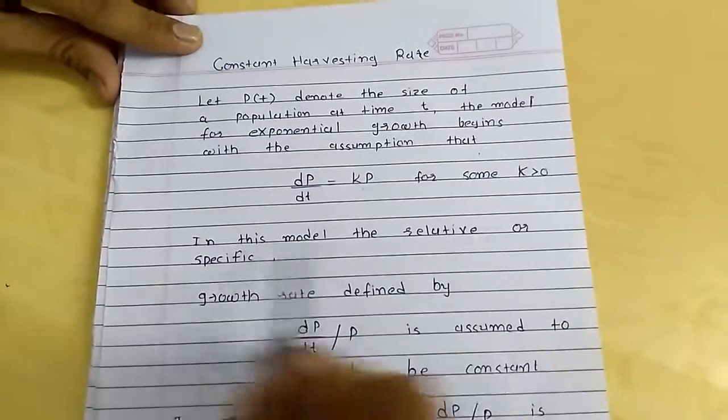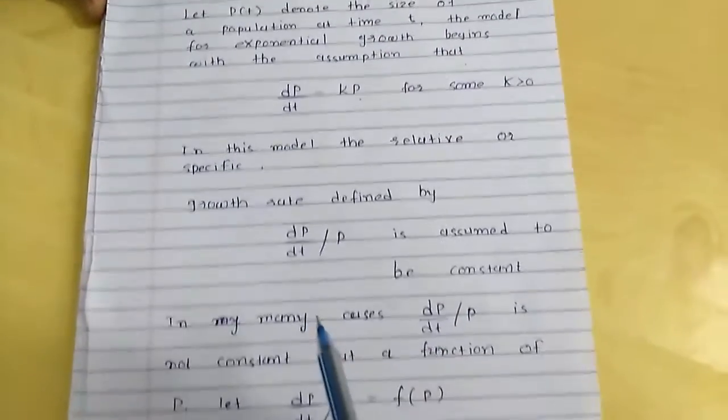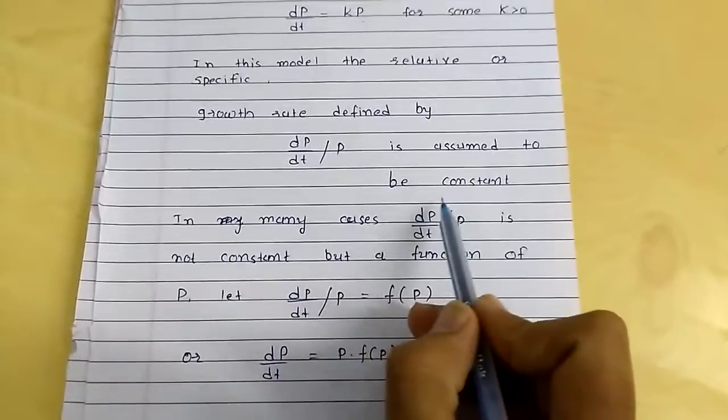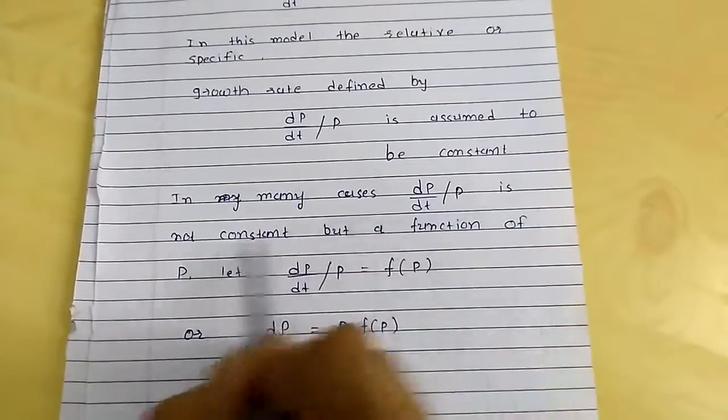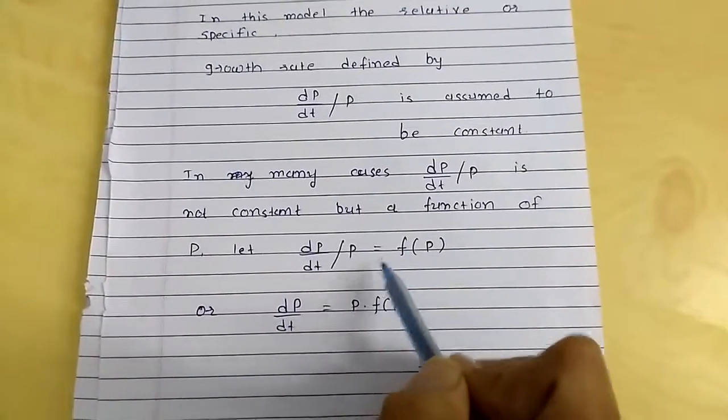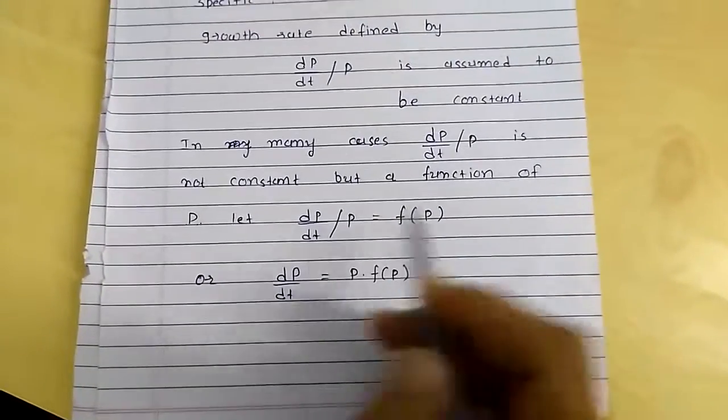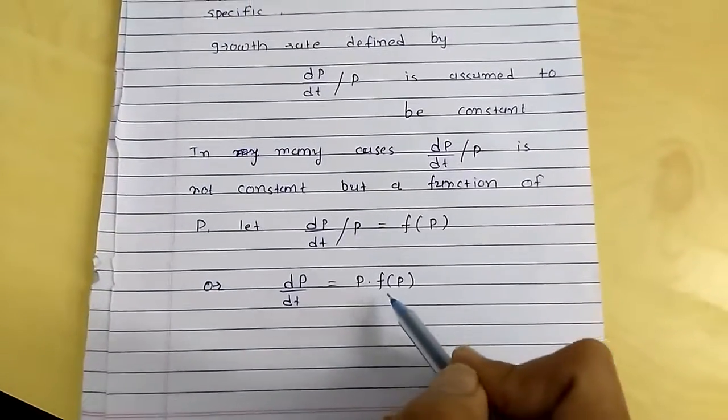In this model, the relative or specific growth rate defined by (dp/dt)/p is assumed to be a constant. In many cases, (dp/dt)/p is not a constant but a function of p. Let (dp/dt)/p equal k(p), or dp/dt equals p times f(p).